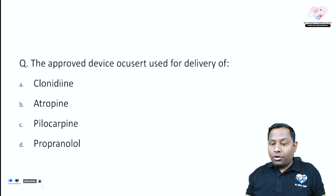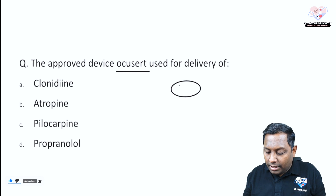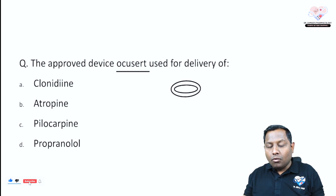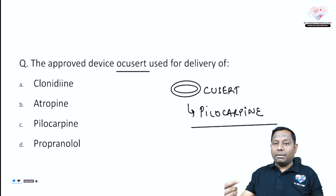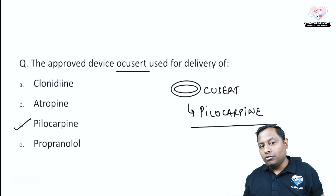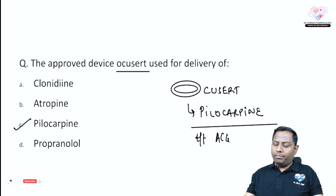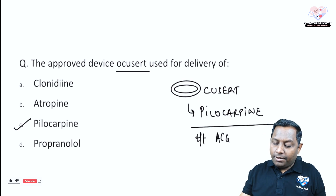The next question is about the approved device Occu-Cert. Occu-Cert is a new drug delivery system — it is a ring-shaped device placed under the lower eyelid. This device mainly contains pilocarpine, and is used to deliver pilocarpine for the treatment of angle-closure glaucoma and also open-angle glaucoma. Remember: Occu-Cert delivers pilocarpine, not propranolol or atropine.